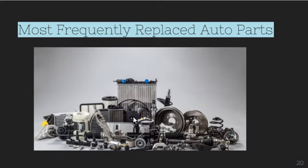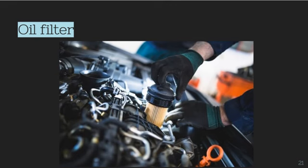Now we look at the most frequently replaced automotive parts. The first is the oil filter. No matter what type or model of vehicle you own, the oil filter is the part you'll need to replace the most. The lubrication system is vital to the proper operation of any internal combustion engine. Depending on the car manufacturer and the type of oil used, you'll need to get the engine oil and oil filter replaced every 5,000 to 20,000 kilometers.